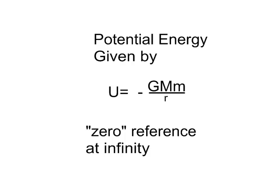So, just a quick reiteration for reference. Potential energy is given by that equation. You'll notice that there's a negative in front of it. And the zero reference is set at infinity. And so, something starts with zero potential energy and just loses it from there.